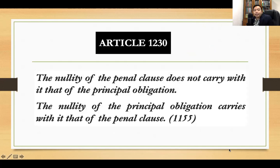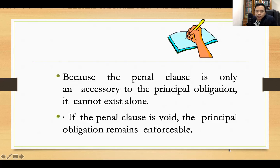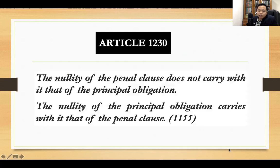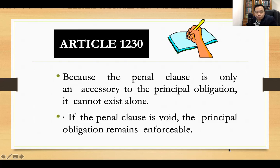Article 1230: the nullity of the penal clause does not carry with it that of the principal obligation. The nullity of the principal obligation carries with it that of the penal clause. This means the extinguishment of the principal will carry with it the extinguishment of the accessory obligation, but the opposite is not true.